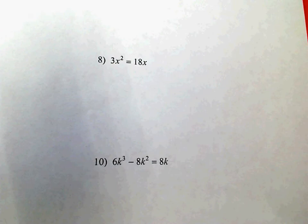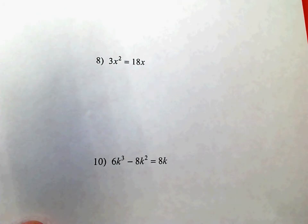Your answer for number 7 should have been m is equal to negative 2 over 3 or positive 1. If that's not what you got, you need to go fix it.